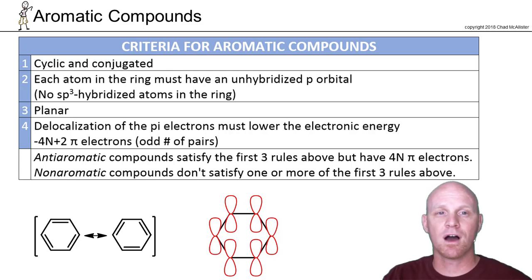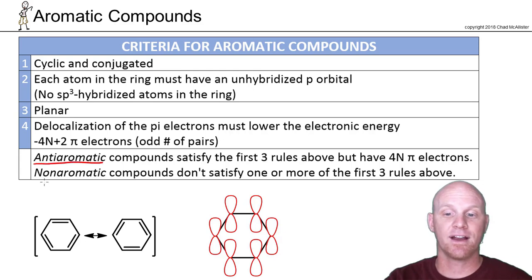So once we figure out how to identify those compounds that are aromatic, then we can talk about the ones that aren't. Because the compounds that aren't aromatic will either fall into one of two categories: they'll either be anti-aromatic or they'll end up being non-aromatic. So any compound I show you, you should be able to put it in one of those three categories.